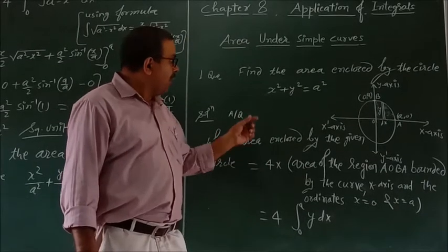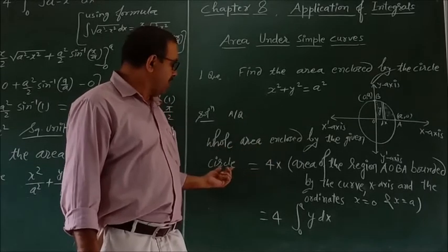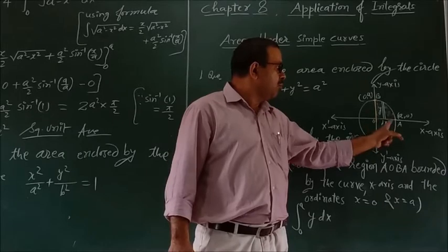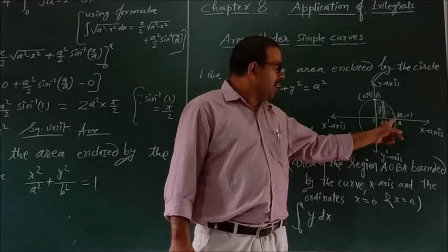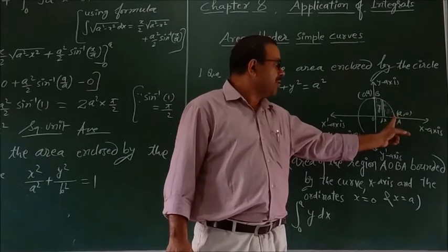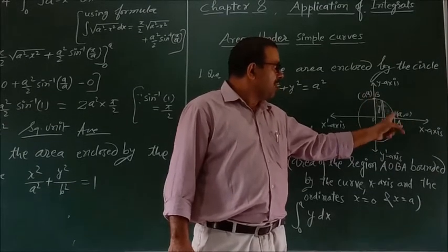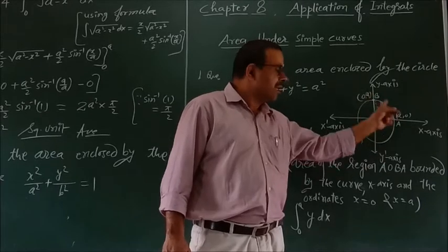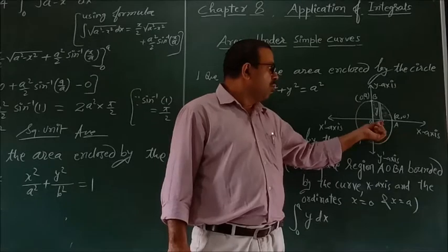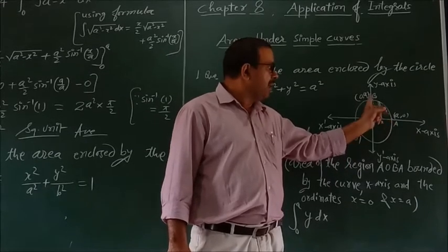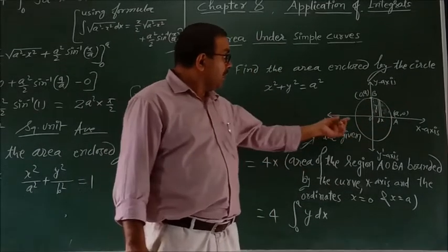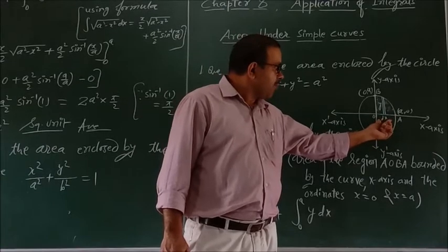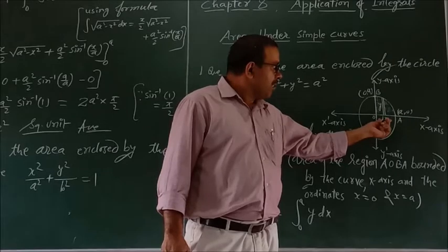According to the question, the whole area is equal to the area of the circle. It is equal to four times the area bounded by points A, B, and O. Point A is (a, 0) and point B is (0, b). So this is the boundary area. The main area we need is the area of region A, B, O, A, which equals the required part.